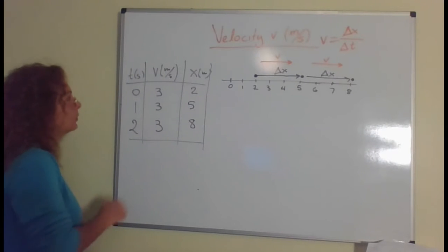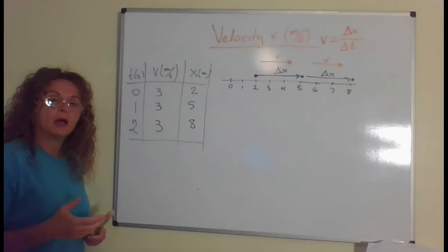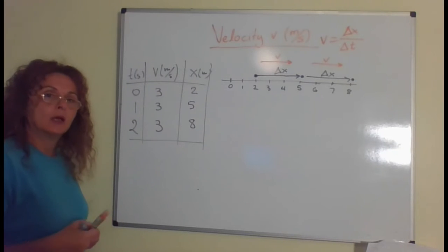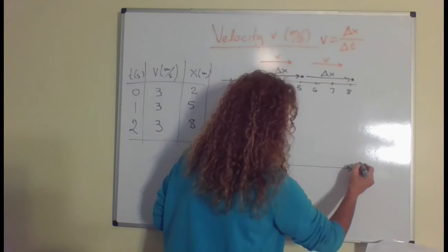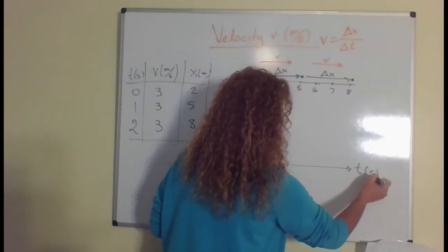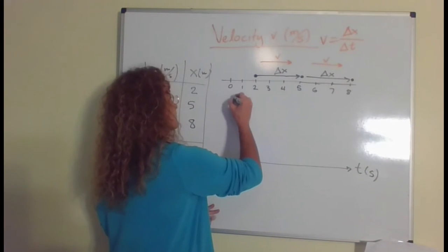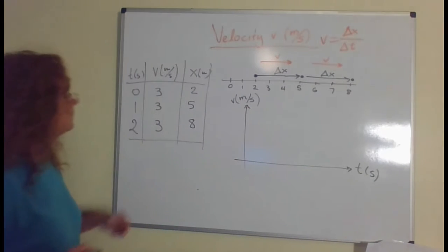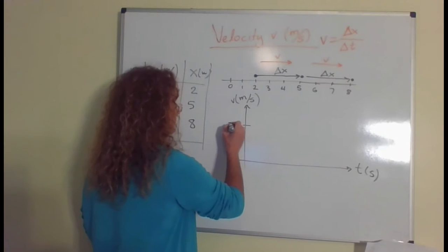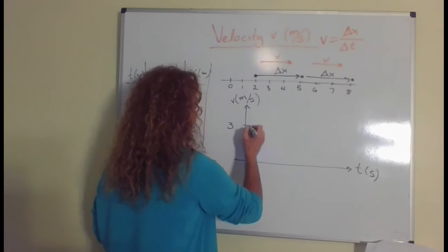Now, if I want to do the graph of how velocity is with time, a velocity-time graph. In our example, the velocity stays the same. It is 3 meters per second the whole time.